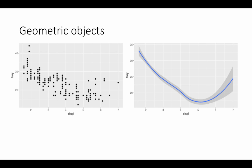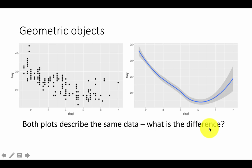Okay, so now look at these two plots. They show the same information, displacement on the x-axis and highway mileage on the y-axis. What is really different about them? Clearly, both describe the same data. What is the difference?